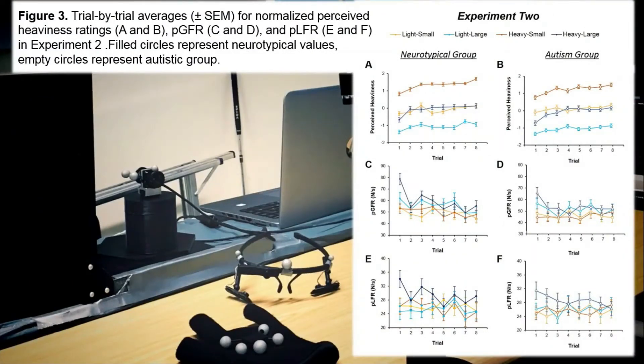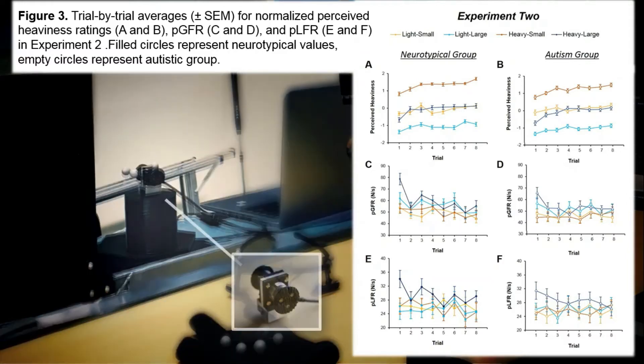Surprisingly, however, there was very little autism-related effects shown in either experiment. If we take this figure from Experiment 2, we can see the perception of object weight and peak grip force rate and peak load force rate profiles over time were comparable in both groups.